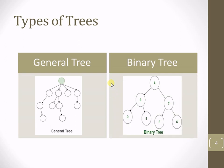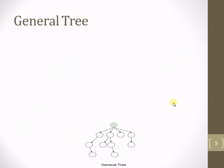The name itself suggests that this is the general tree, where there is no specific condition — it is very general. But this is the binary tree; it has a specific condition, which I am going to explain very soon. Now let's start with the general tree, and with this example I am going to explain what a general tree is.